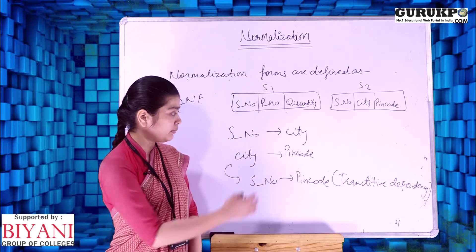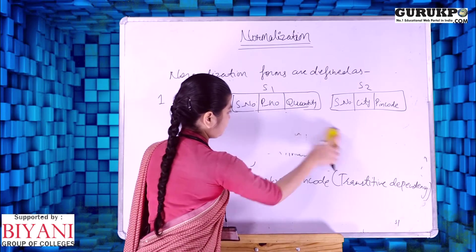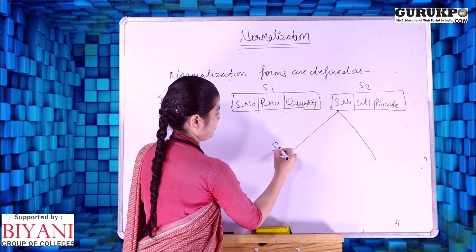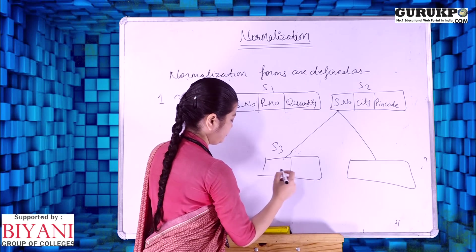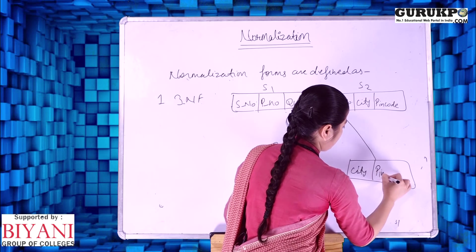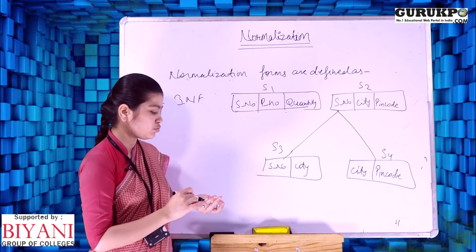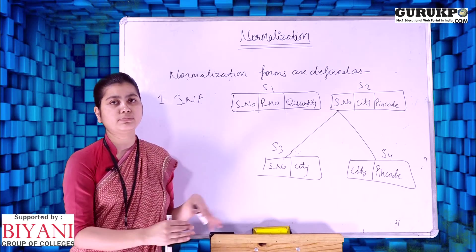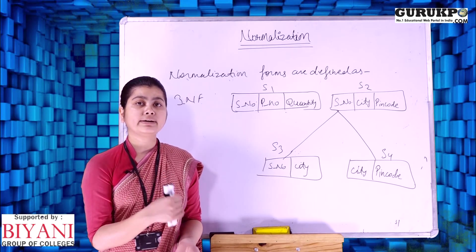We remove the transitive functional dependency by splitting table S2 again into two more tables: one with serial number and city, and another with city and pin code. After splitting S2 into tables S3 and S4, there is no transitive functional dependency. In Third NF we remove transitive functional dependency, ensuring the table is already in Second NF before applying Third NF conditions.